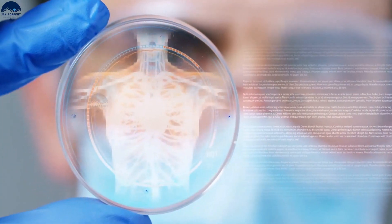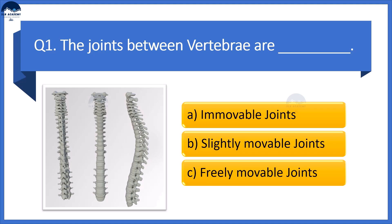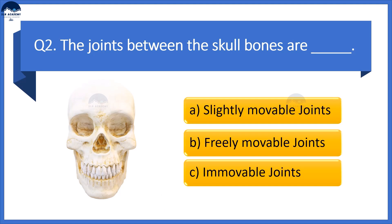Here are a few questions for you. Question 1: The joints between vertebrae are — Option A: Immovable joints, Option B: Slightly movable joints, Option C: Freely movable joints. Question 2: The joints between the skull bones are — Option A: Slightly movable joints, Option B: Freely movable joints, Option C: Immovable joints. Write down your answers in the comment section below.